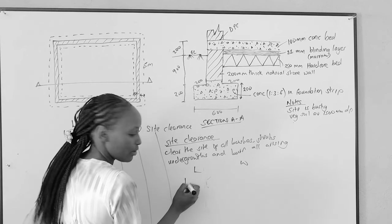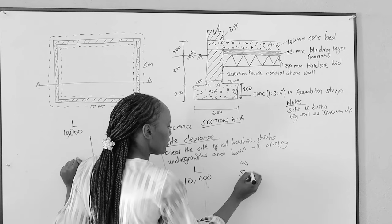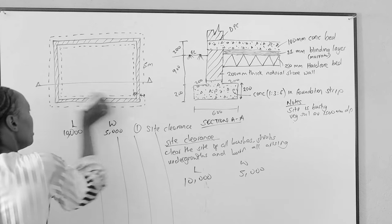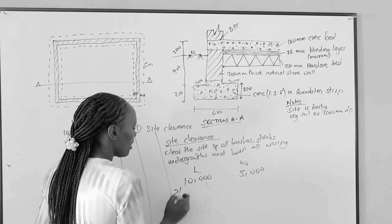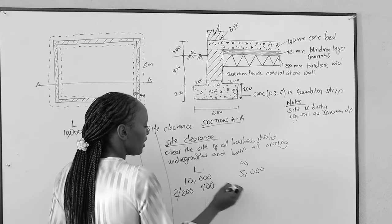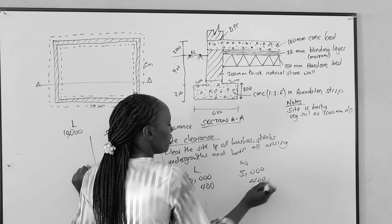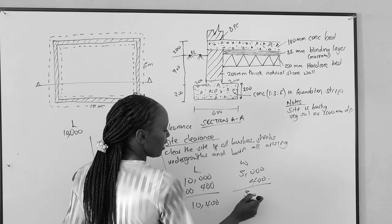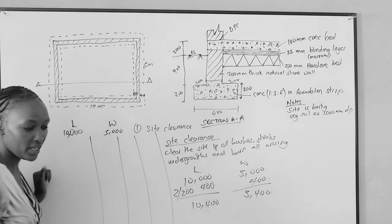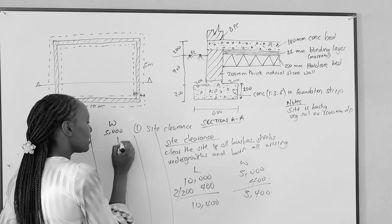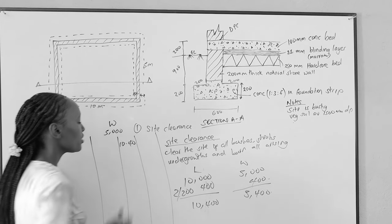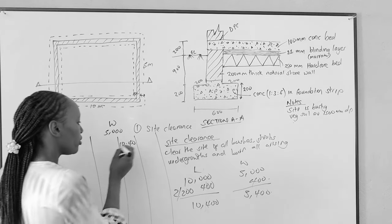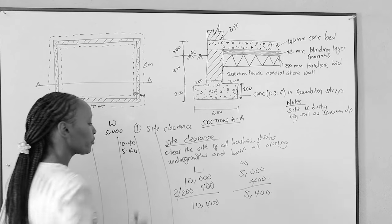The length is 10,000 and the width is 5,000. We add the foundation spread: 2 times 200 equals 400 for the length, and 2 times 200 equals 400 for the width. So the total site clearance length is 10,400mm and the width is 5,400mm. In the dimension column we write 10,400 and 5,400, converting to meters, then multiply to get the area.